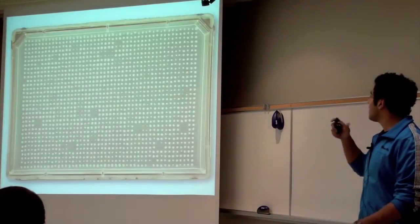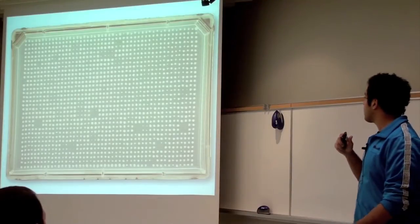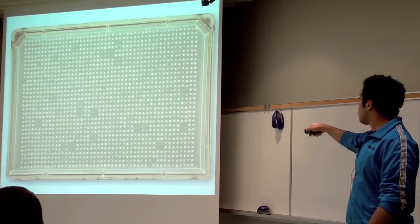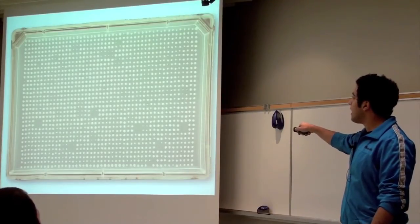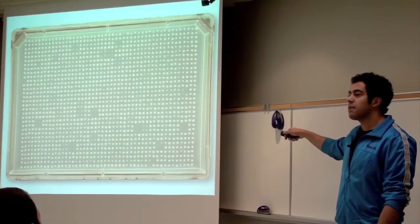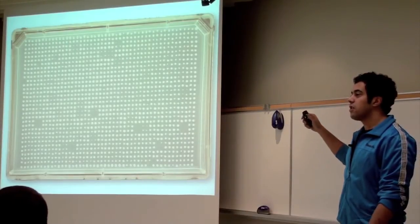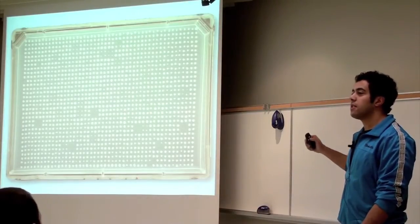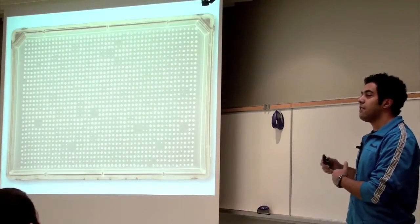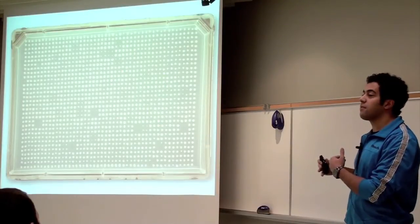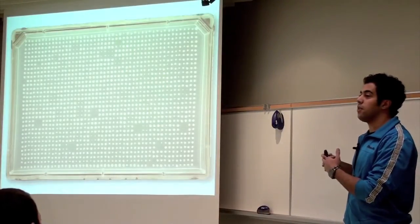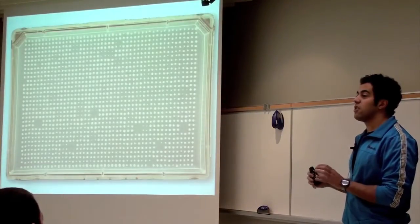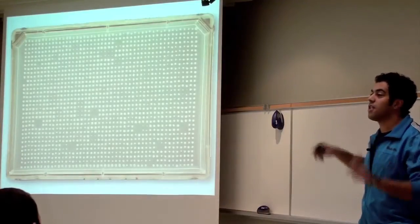So the synthetic genetic array typically looks something like this. It's a screen such that each colony is a group of cells, typically in yeast, which you have two genes knocked out, so a double mutant instead of a single mutant. And what you're trying to look for is you're trying to look for a deviation in the colony size from what you'd expect if you had knocked out these two genes independently.